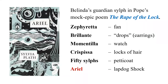Ariel allots duties to other sylphs: Zephyretta guards Belinda's fan, Brillante guards her earring, Momentilla guards her watch, Crispissa guards her locks of hair, and fifty sylphs guard her petticoat. Questions are often asked about who is allotted what. You can use mnemonic techniques: 'Zephyr' in English refers to the west wind, so Zephyretta is associated with the fan — something to do with air and wind.